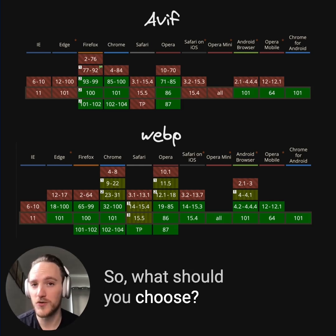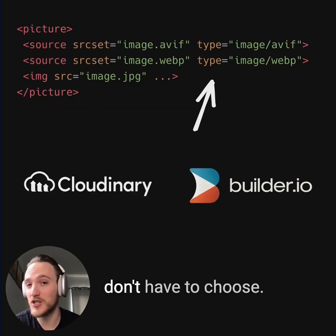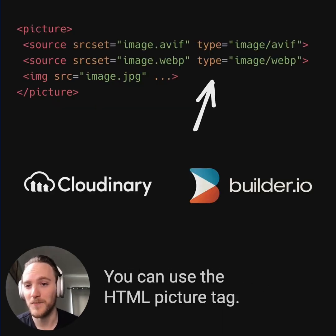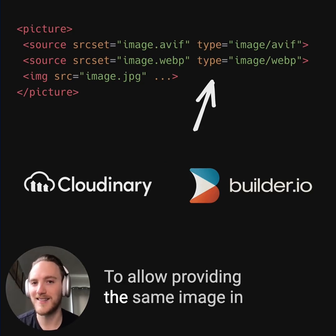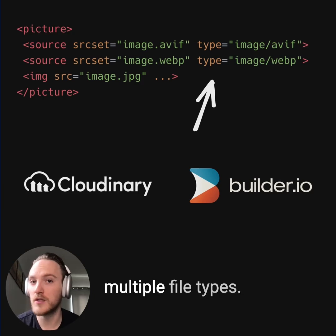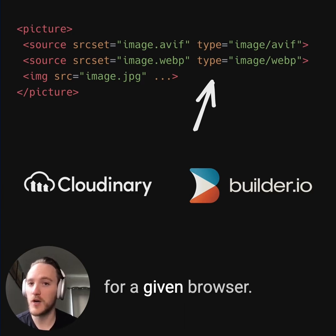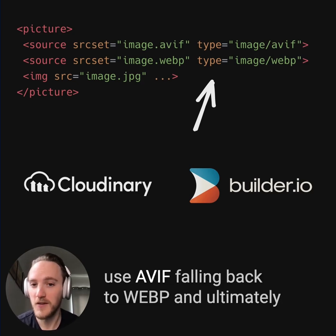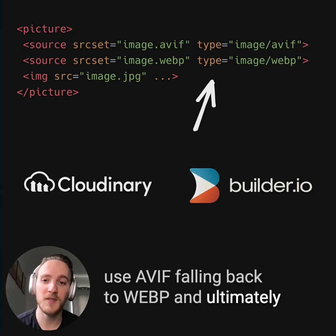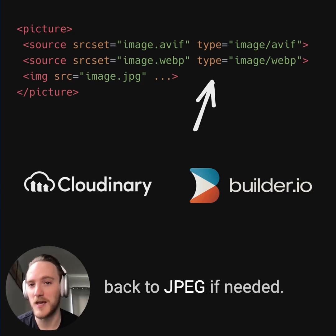So what should you choose? Well, realistically speaking, you actually don't have to choose. You can use the HTML picture tag to allow providing the same image in multiple file types, so you can use the best quality image for a given browser. Browsers that support AVIF will use AVIF, falling back to WebP, and ultimately back to JPEG if needed.